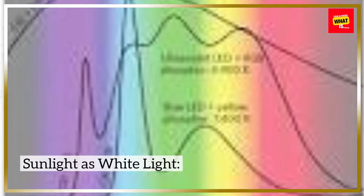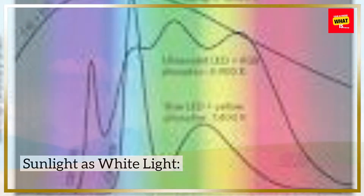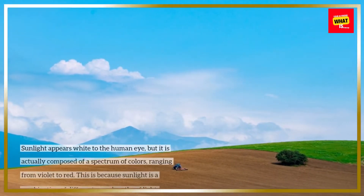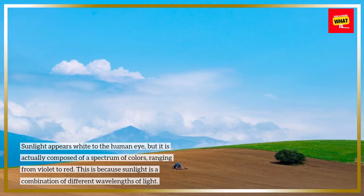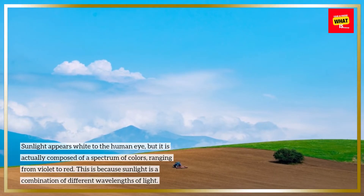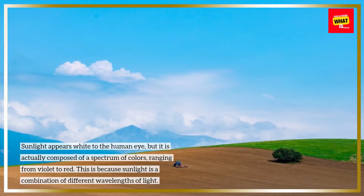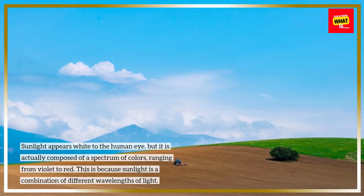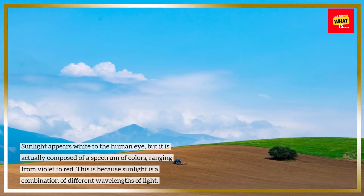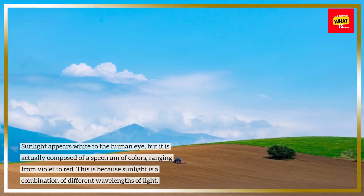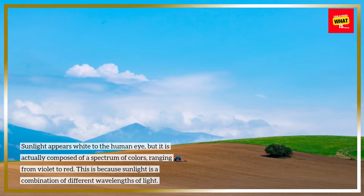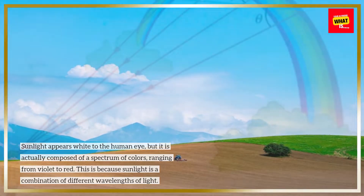1. Dispersion of light. Sunlight appears white to the human eye, but it is actually composed of a spectrum of colors, ranging from violet to red. This is because sunlight is a combination of different wavelengths of light.